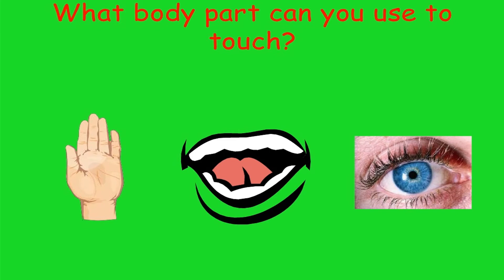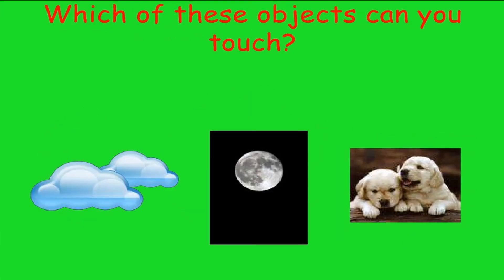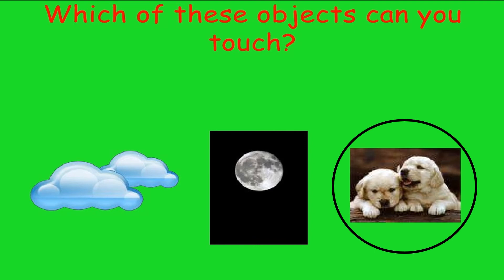Which body part do you use to touch? We use mostly our hands to touch. Now look at these three pictures — which of these objects can you touch? Can we touch the clouds? No, we cannot. Can we touch the moon? No, we cannot touch the moon. What about dogs? Yes — if the dog is near us, we can touch the dog!